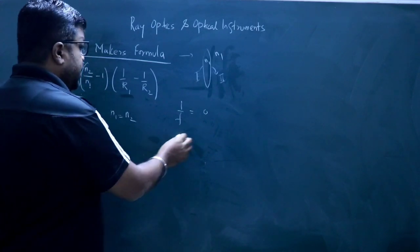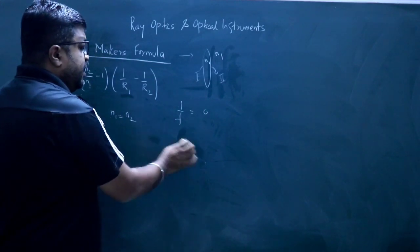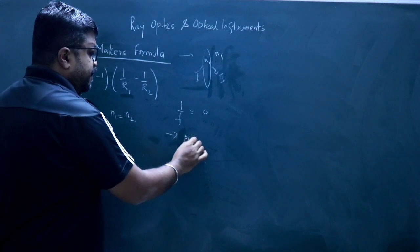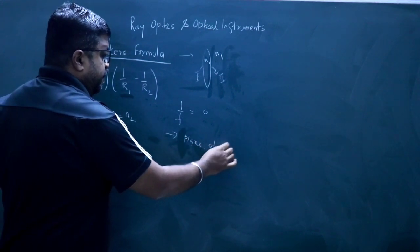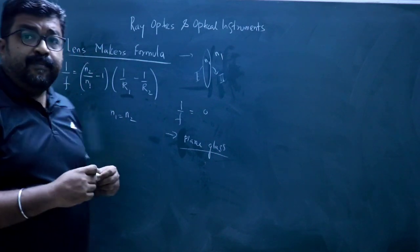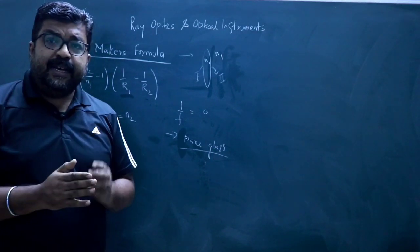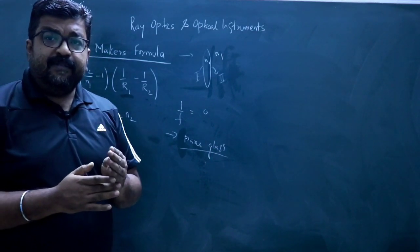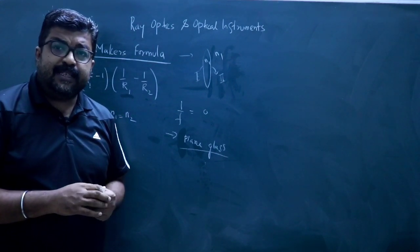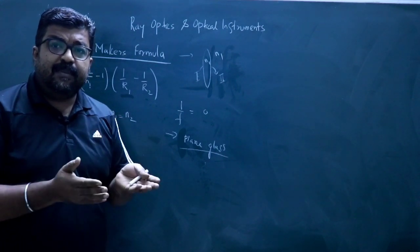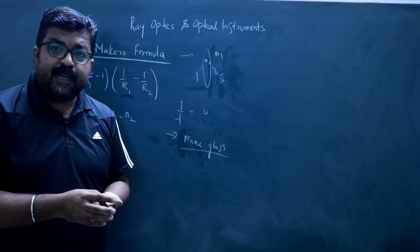This means the lens is behaving like a plane glass. That means if the lens is in a medium whose refractive index equals that of the lens, it will behave like a plane glass — it will be invisible, it will not be visible.